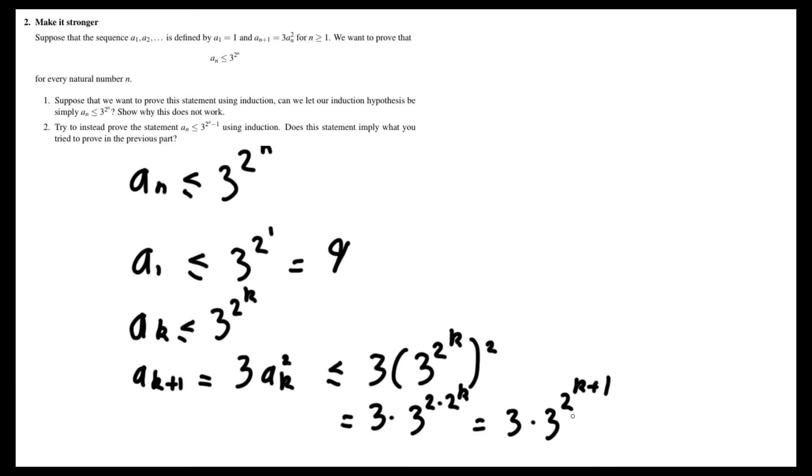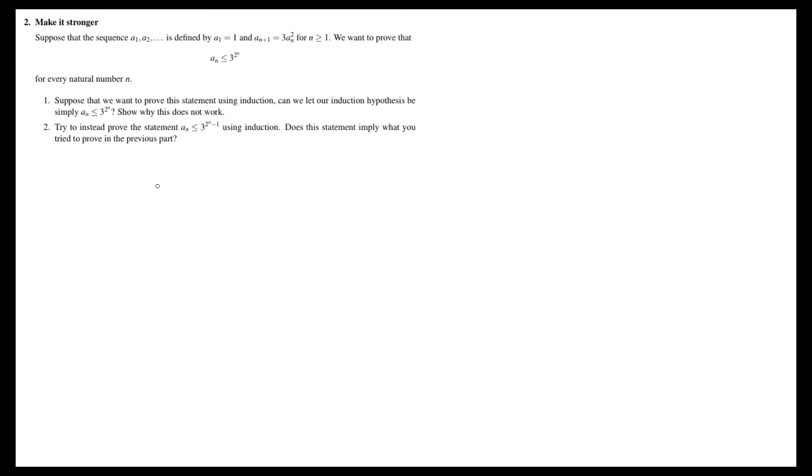So instead we try the suggestion of proving that aₙ is less than or equal to 3 to the 2ⁿ⁻¹. So then the base case is that a₁ is less than or equal to 3 to the 2 to the 1 minus 1, which is 1, which is equal to 3. And since a₁ equals 1, obviously that holds.